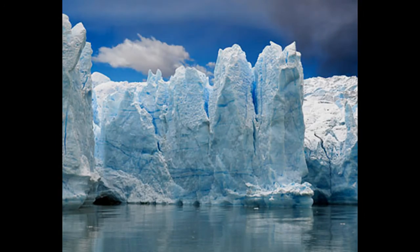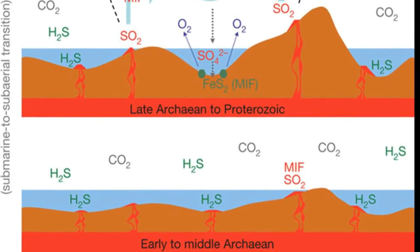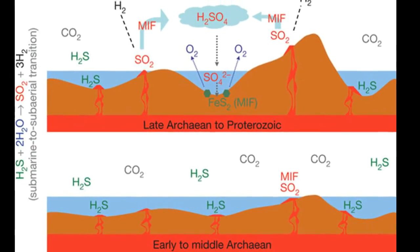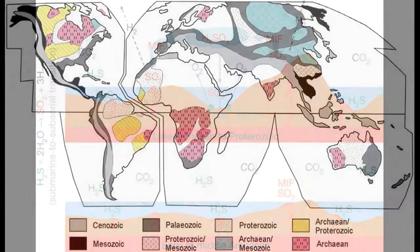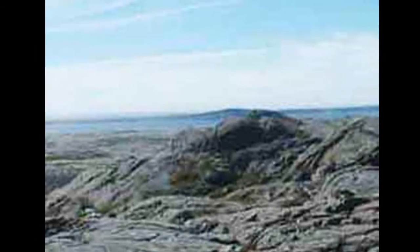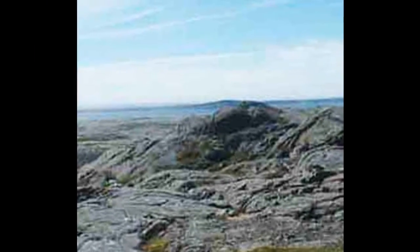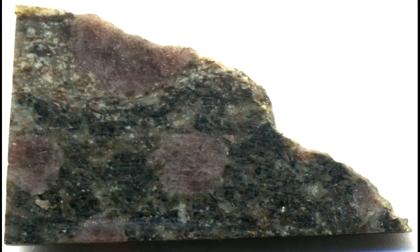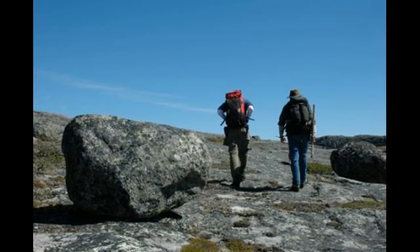Throughout the Archean, oceanic and island arc crust was produced semi-continuously for 1.5 billion years. Thus, most Archean rocks are igneous. The oldest known rocks on Earth, estimated at 4.28 billion years old, are the faux amphibolite volcanic deposits of the Nuvvuagittuq Greenstone Belt in Quebec, Canada.